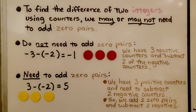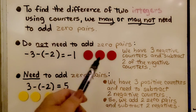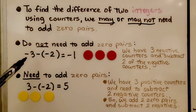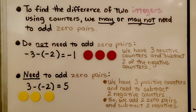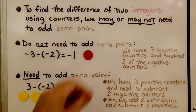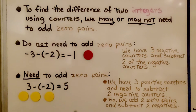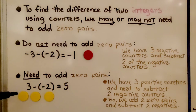To find the difference of two integers using counters, we may or may not need to add zero pairs. We do not need to add zero pairs for this one. We have negative 3, so we have three red counters, and we need to subtract negative 2. We just take away two of the negative counters — one, two. That leaves us with one negative counter. Our difference is negative one.